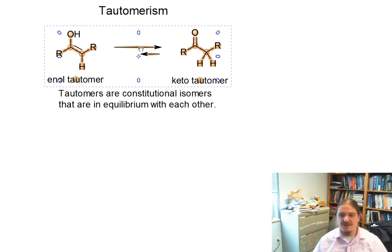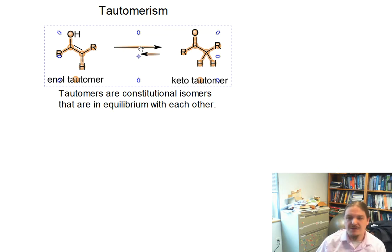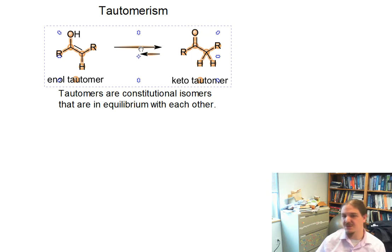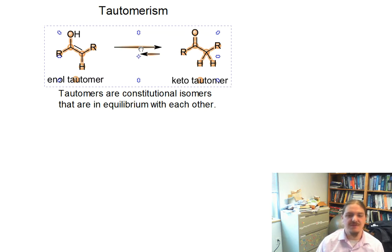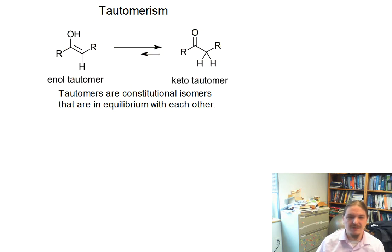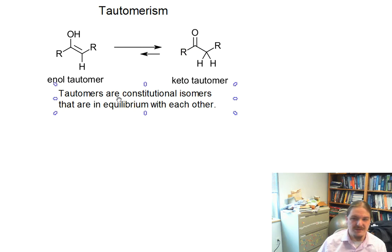If you've watched the intro video on alkyne hydration, you'll know that tautomers are constitutional isomers that are in equilibrium with each other. There are actually a lot of examples in organic chemistry of molecules that are constitutional isomers of each other but are somehow in equilibrium. These things are not separable from each other. In any case where an equilibrium can be established, the enol example on the left will isomerize to the keto isomer on the right and vice versa.